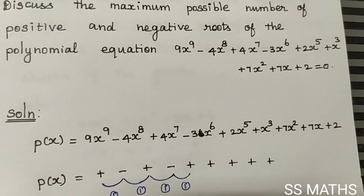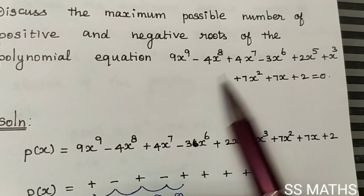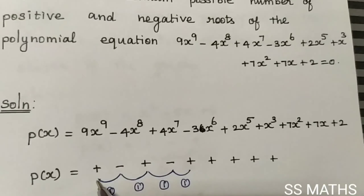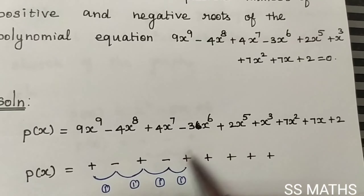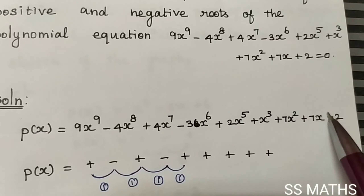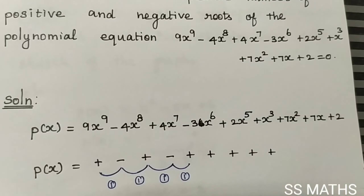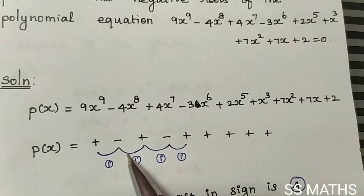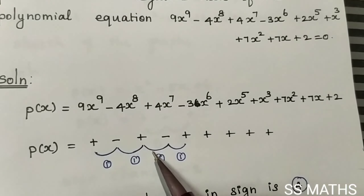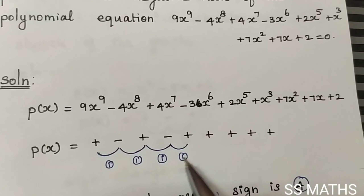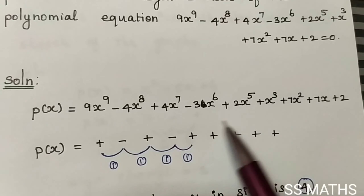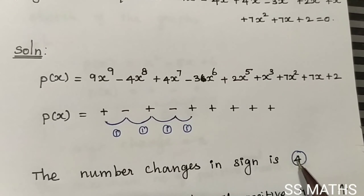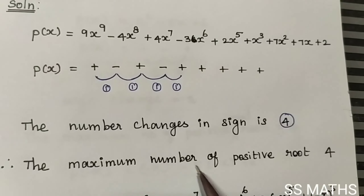First, we write f(x) equal to the given polynomial. The main concept is sign change. Going through the terms: positive, negative, positive, positive, positive, positive, positive, positive, positive. The number of changes in sign is 4. Therefore, the maximum number of positive roots is 4.